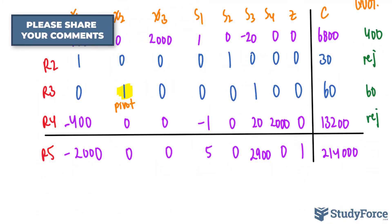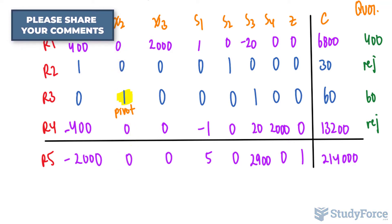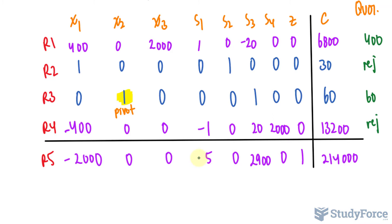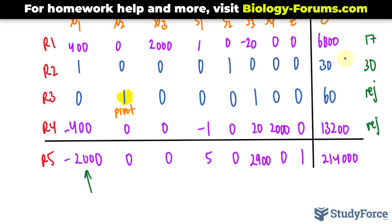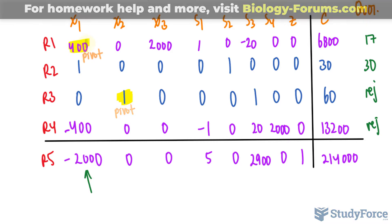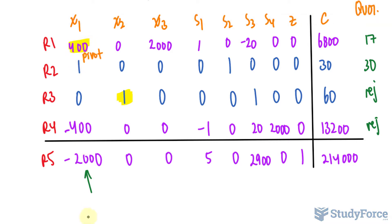We've accomplished our goal for that iteration, with zeros in the right places. However, looking at row 5, there is still a negative number: negative 2,000. This is the new negative indicator and pivot column. Calculate quotients: 6,800 divided by 400 equals 17; 30 divided by 1 equals 30; 60 divided by 0 — reject; 13,200 divided by a negative number — reject. The smallest quotient is 17, making 400 our new pivot.